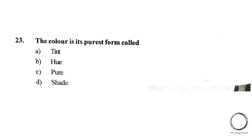Next, the colour in its purest form is called A. Tint, B. Hue, C. Pure, D. Shade. The right answer is B, Hue.